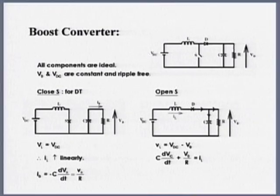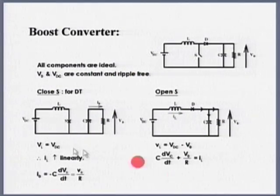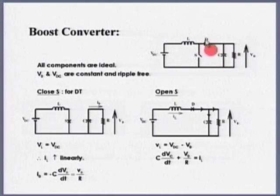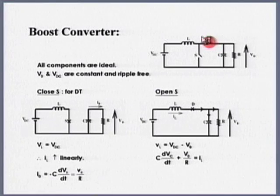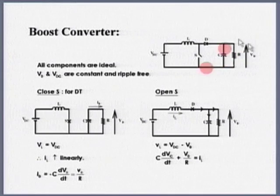Now the boost converter — the circuit topology is shown here. The switch is turned on and off at a very high switching frequency. When I close S, the diode gets reverse biased because the output voltage appears across D. In the input side, the supply voltage appears across L; the capacitor is supplying power to the load — in other words, the capacitor is discharging.